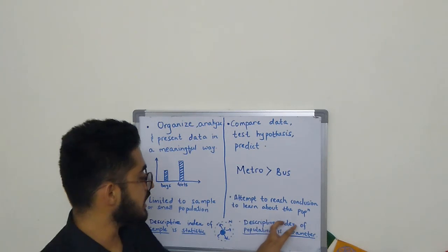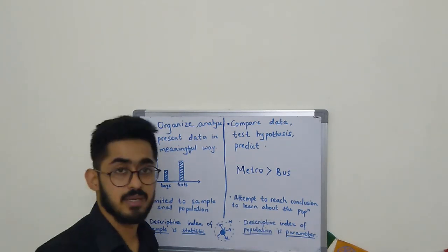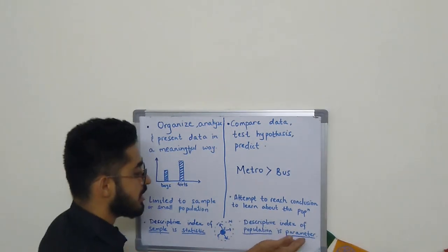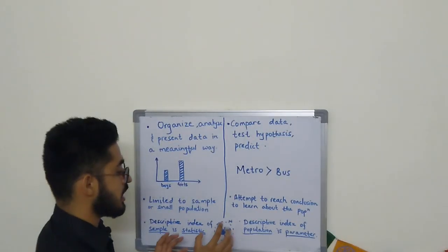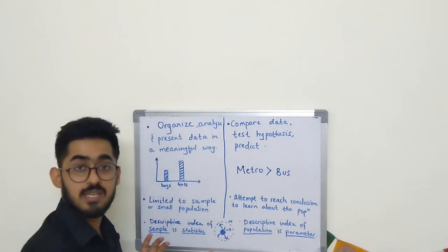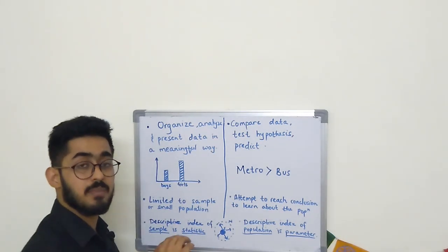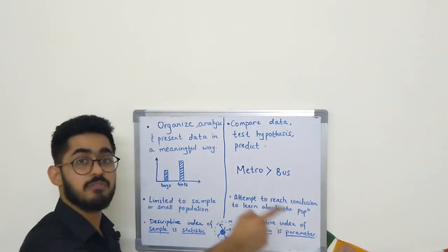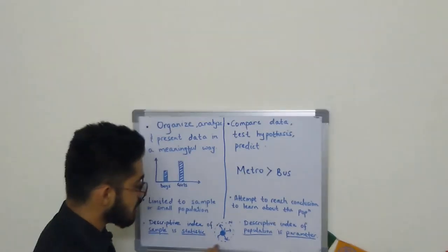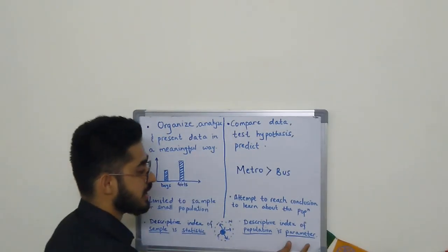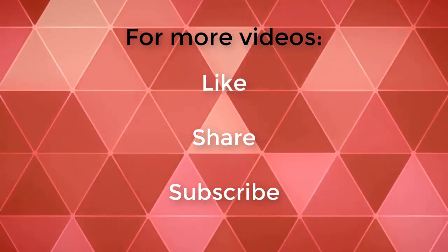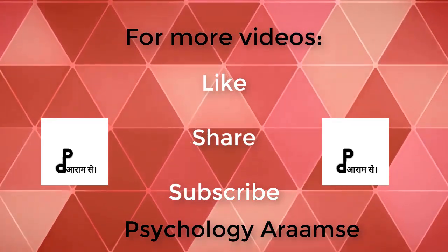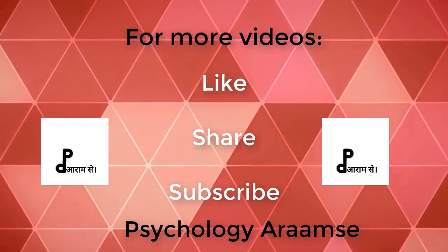The descriptive index of a population is called a parameter. Parameters are the characteristics or information about the whole population—the population characteristics which we study, estimate, and make inferences about.